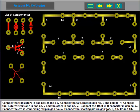Connect the 1000 MFD value capacitor in gap number 5. Connect the cross connecting strip in gap number 5. Connect the shorting pins in gap numbers 9, 10, 12, and 13.